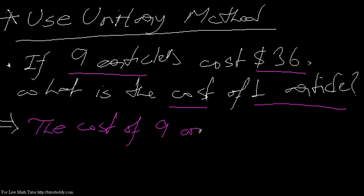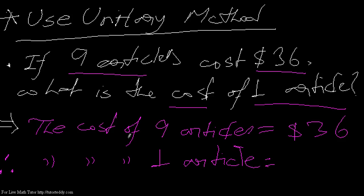The cost of nine articles. The cost of one article is equal to - see, cost of nine articles is $36, so obviously the cost of one article will be much lesser, and this lesser amount will be obtained by a division process.